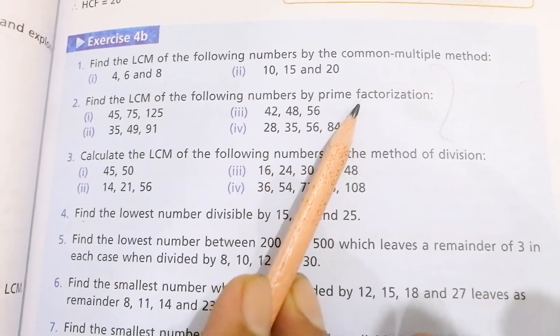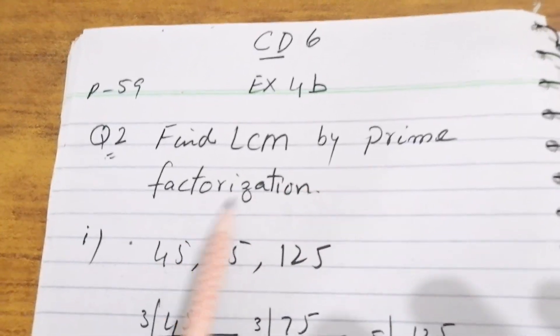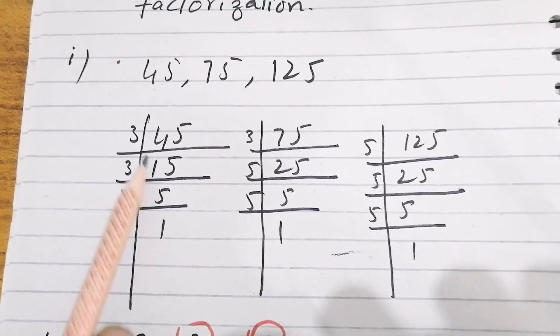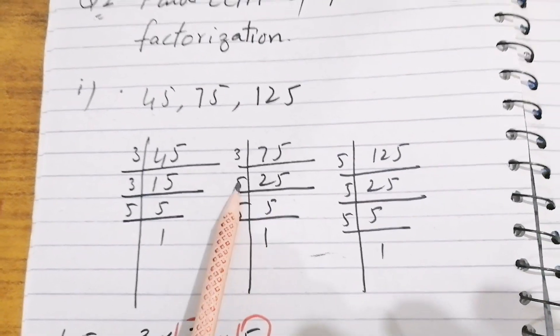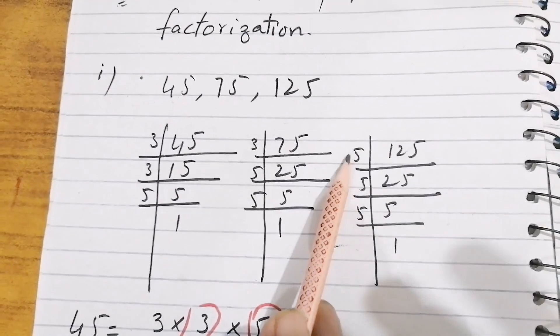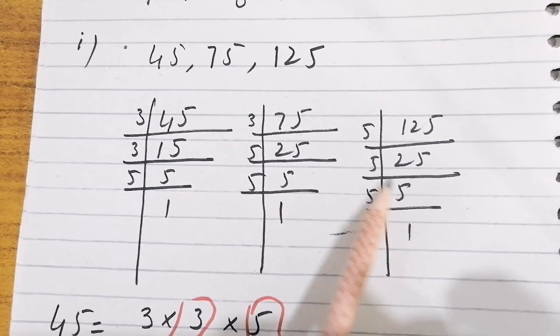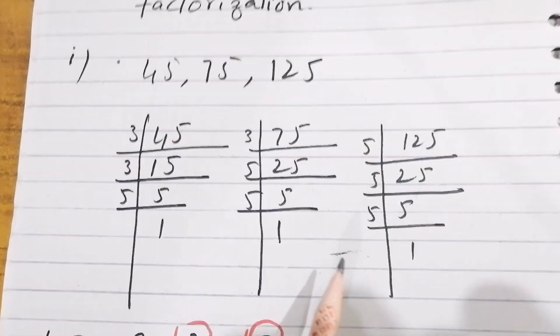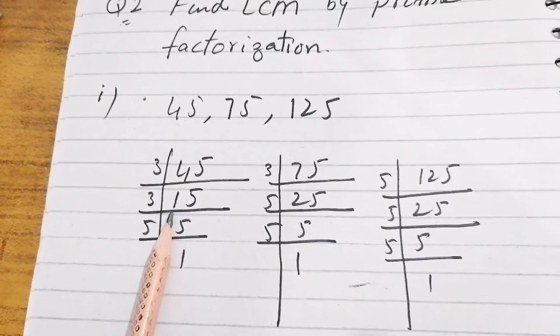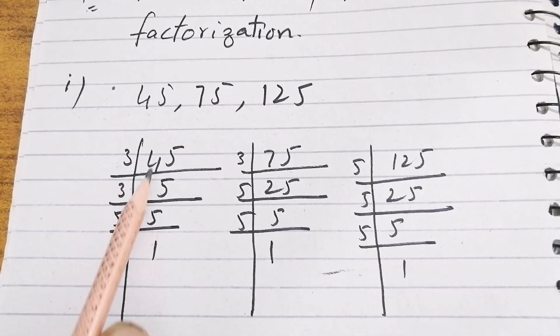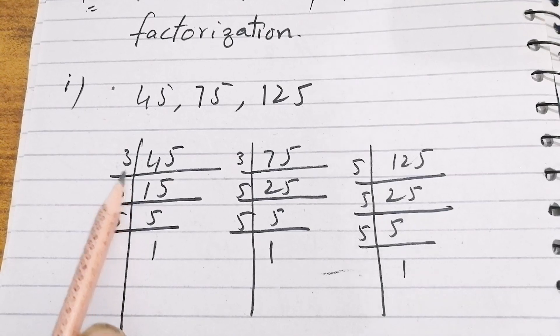Question 2: find the LCM by prime factorization method. We take the prime factors of the given numbers separately and then find the answer. The first set is 45, 75, and 125. For 45: 3×15=45, 3×5=15, so factors are 3×3×5. For 75: 3×25=75, 5×5=25, so factors are 3×5×5. For 125: 5×25=125, 5×5=25, so factors are 5×5×5. You must know how to divide — always start by the smallest number.